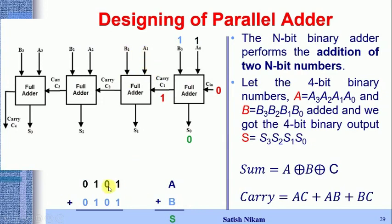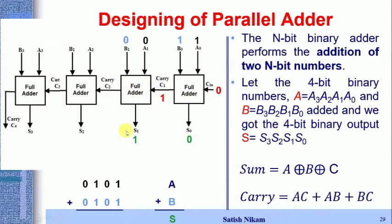For the next bit, a1 = 0 and b1 = 0, with carry-in c1 = 1 from the previous LSB full adder. Calculating sum: 0 XOR 0 XOR 1 gives s1 = 1. For carry: AB = 0, AC = 0, BC = 0, so carry-out c2 = 0.